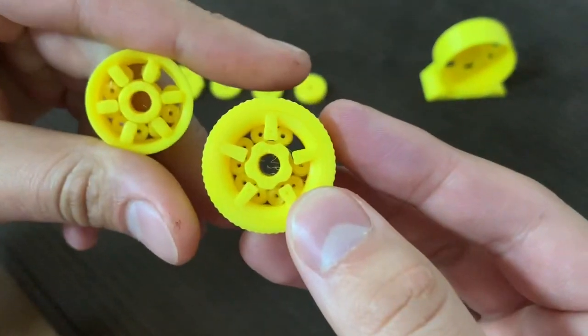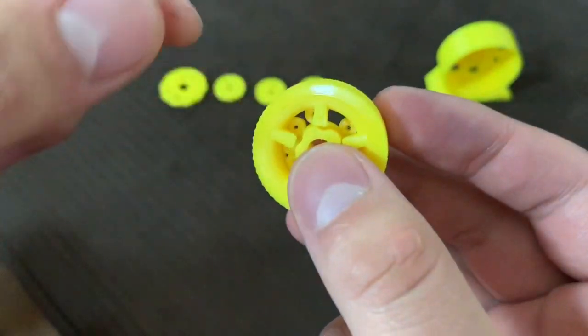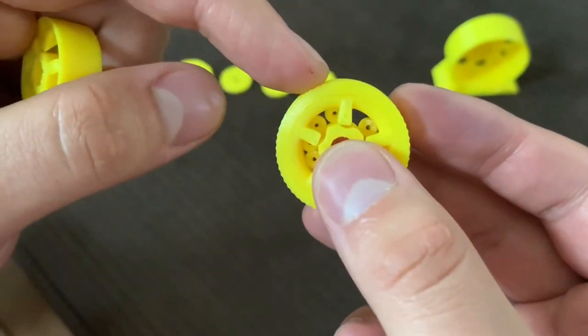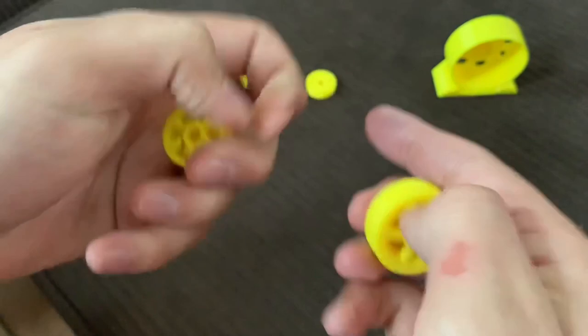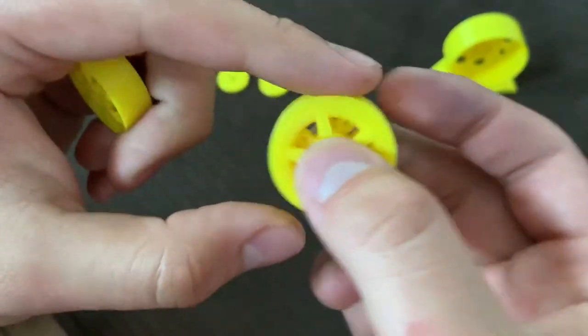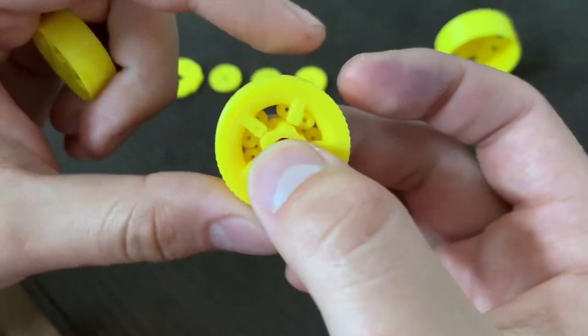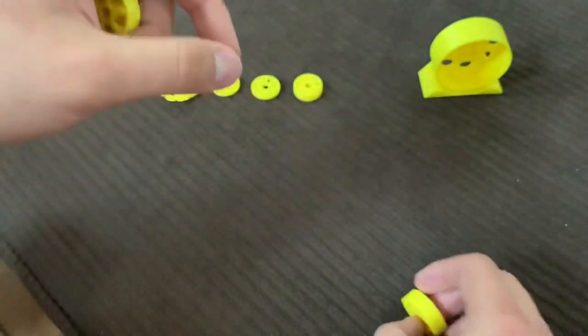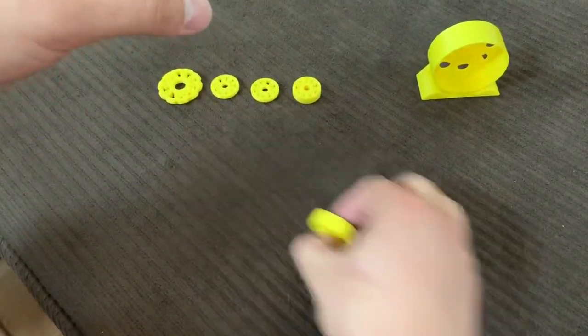And you can basically print the tire in flexible filament, put it onto the rim, and then you would have a little bit of a rubber feel on there. Because on hard floors it's really hard to get it to spin. Like on carpet it goes no problem, but if you have a hard floor it doesn't have that grip.